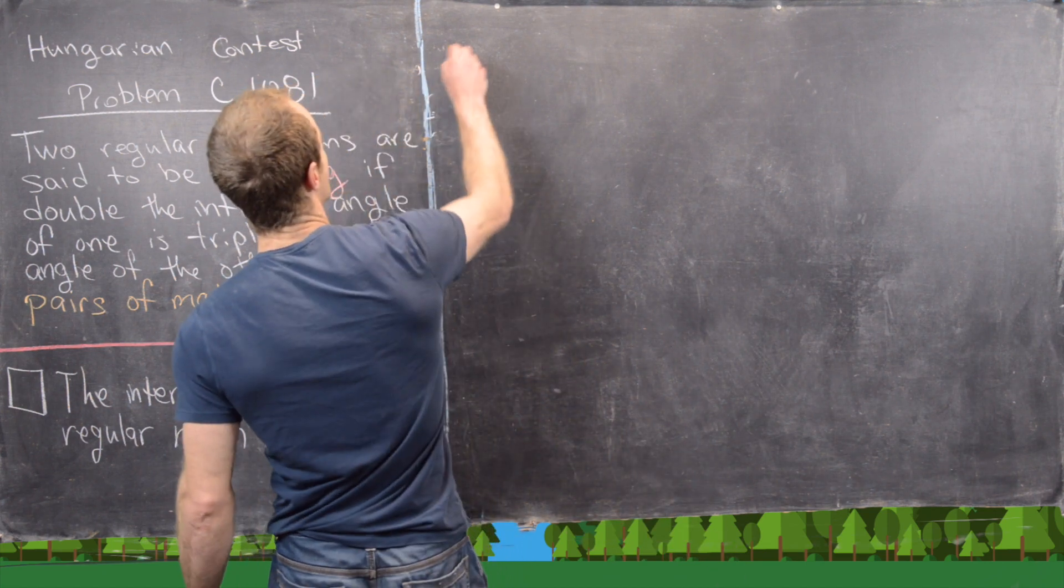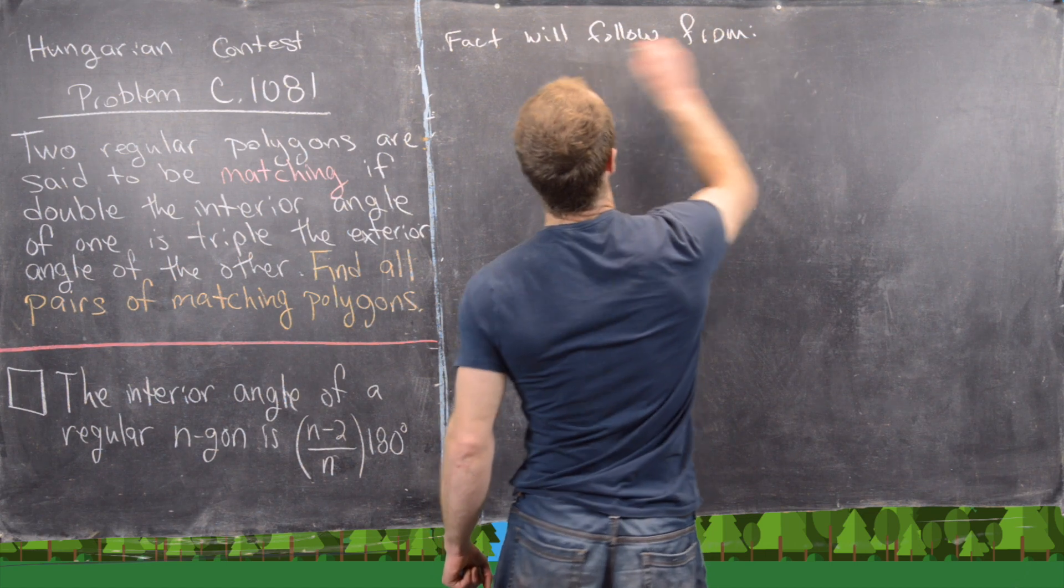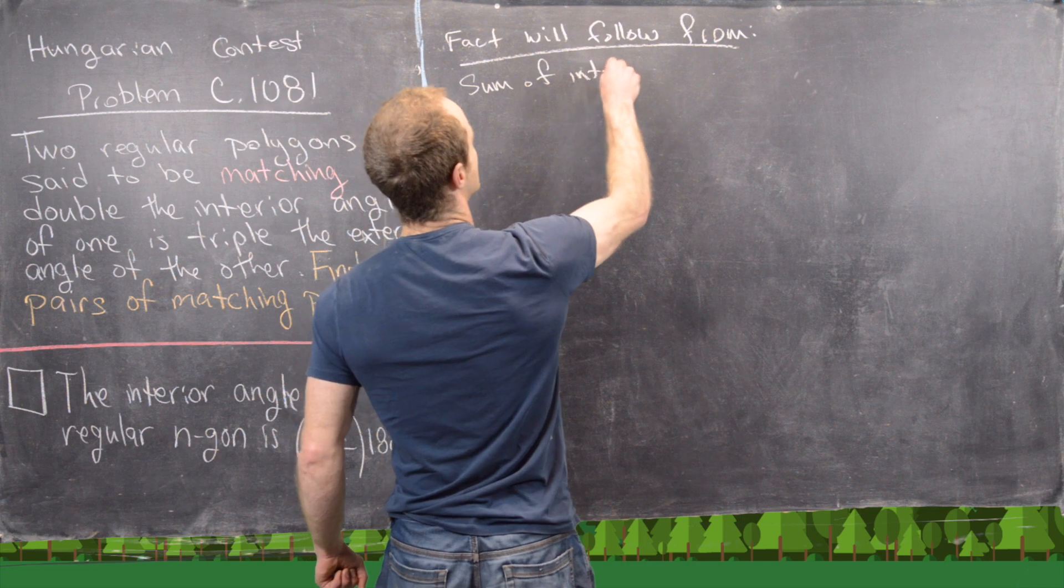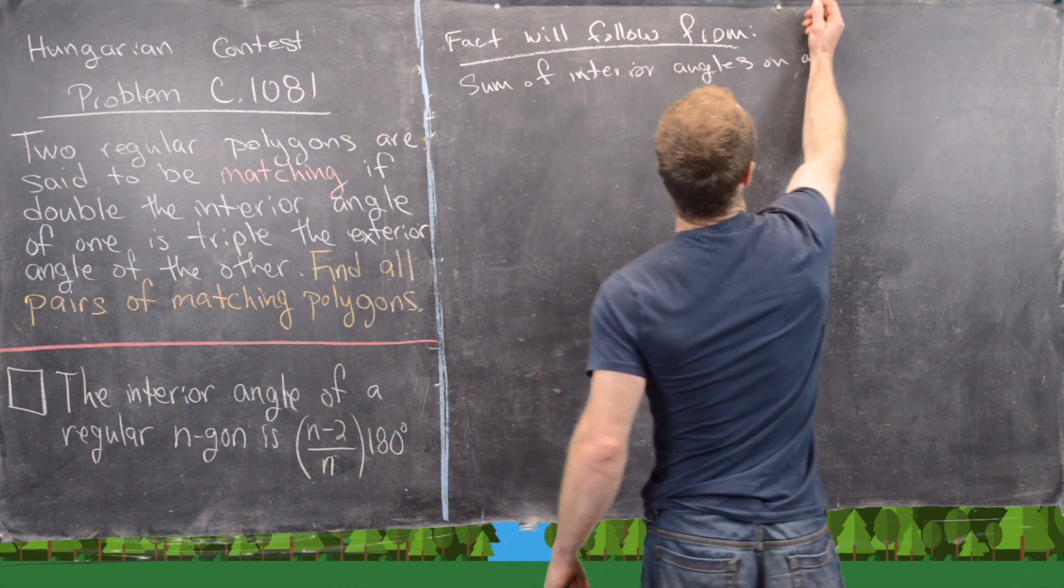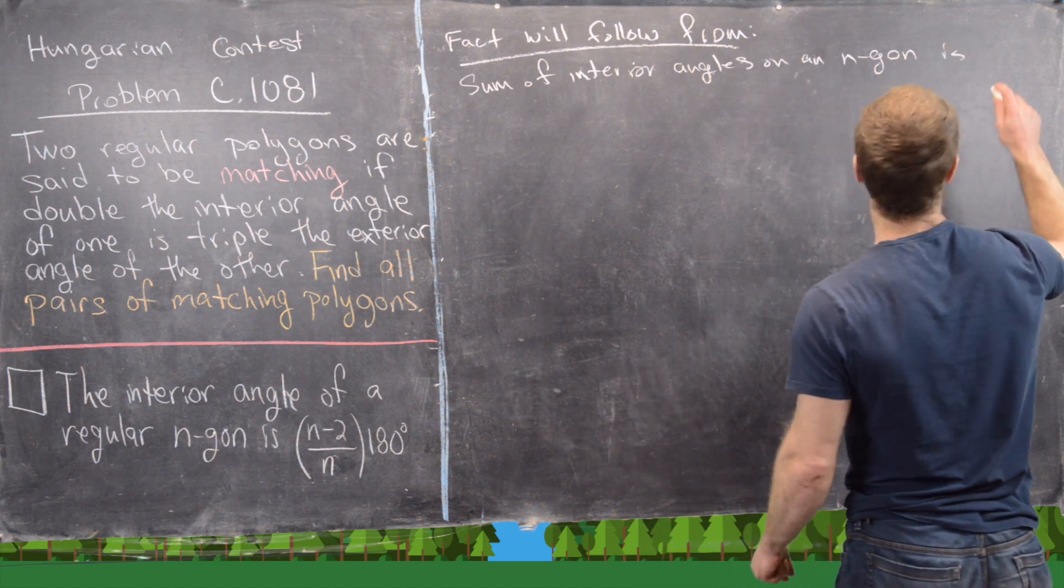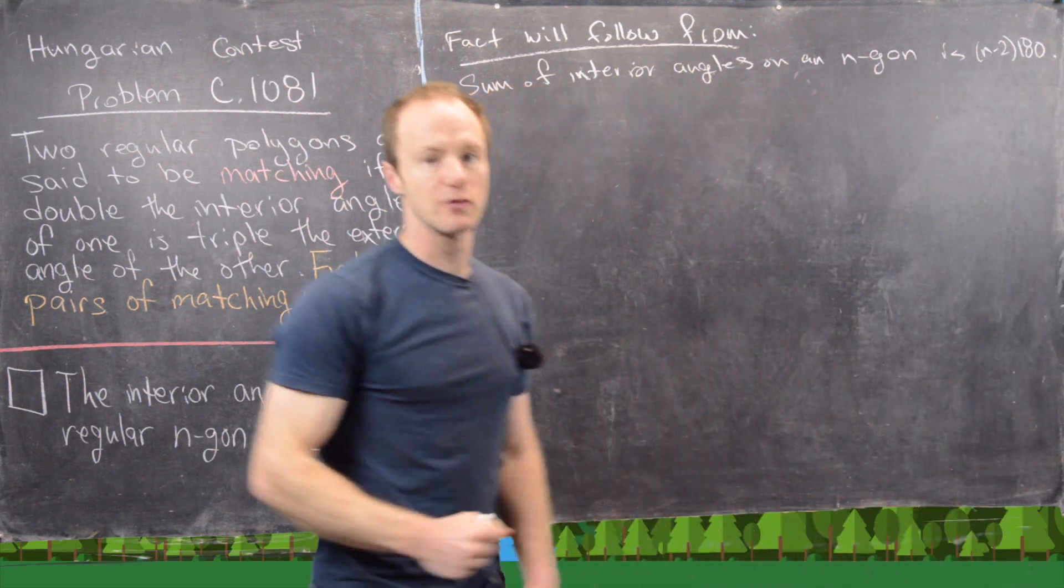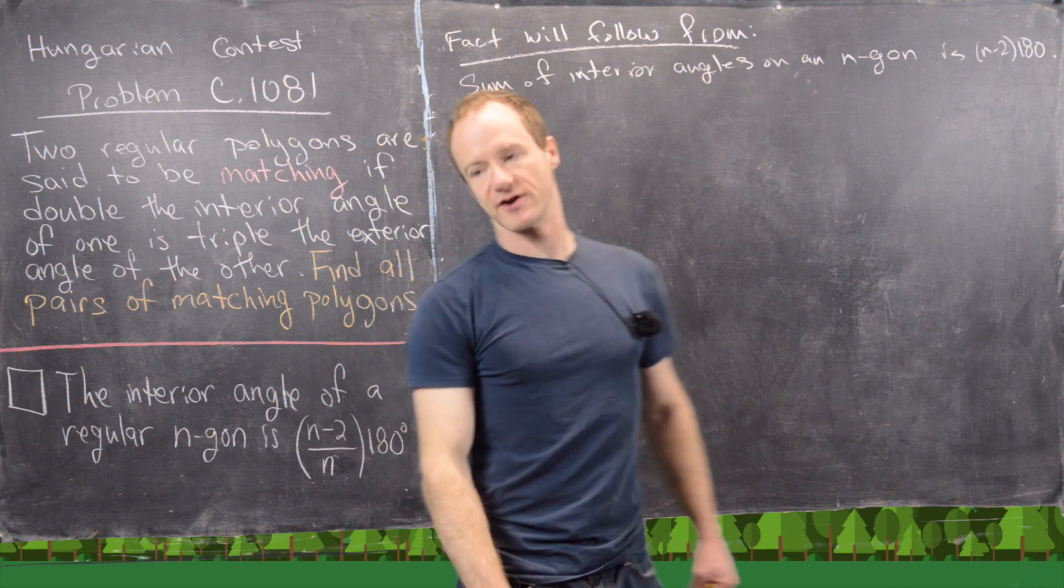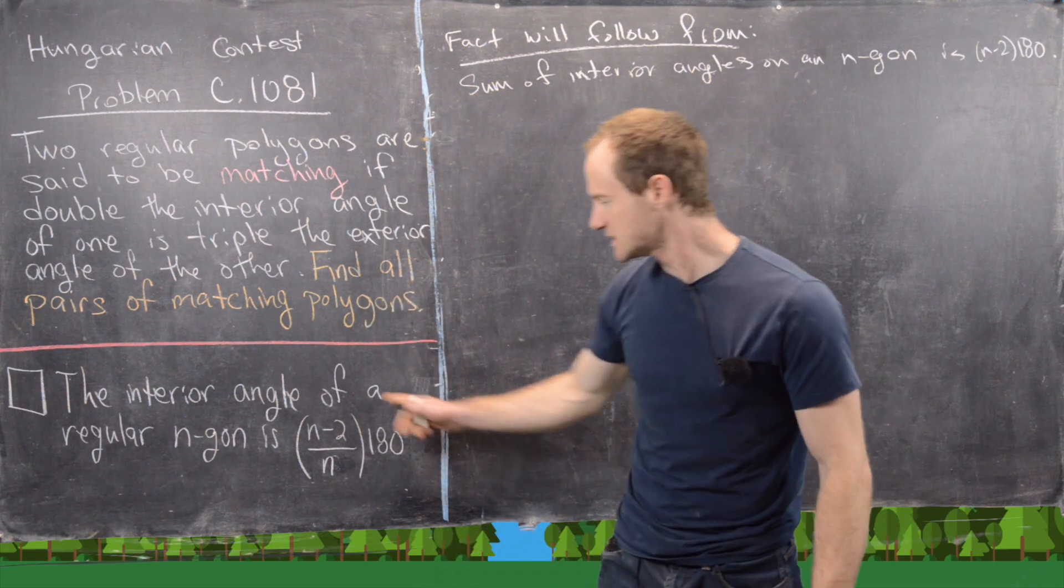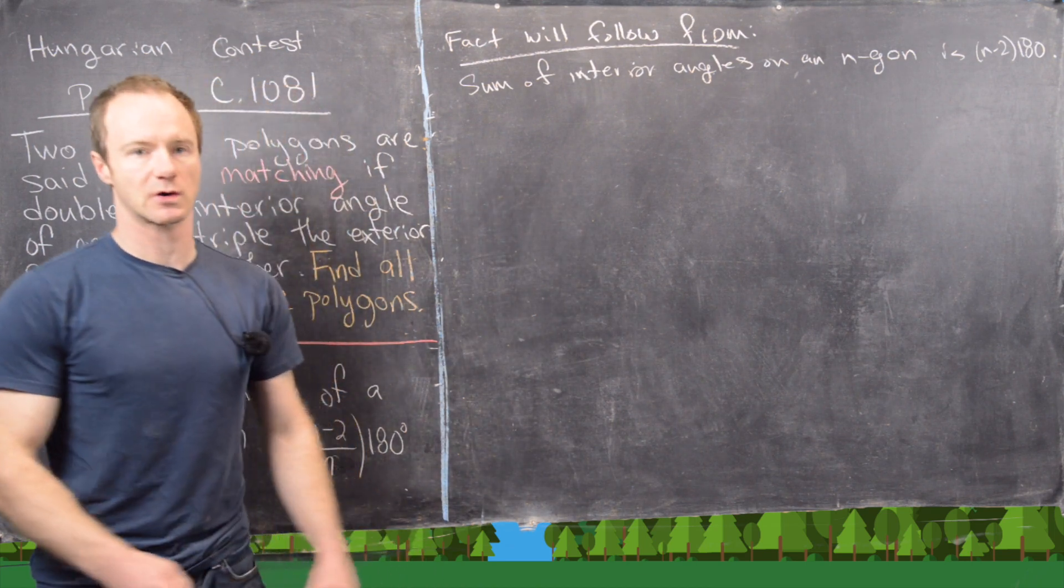So let's go ahead and look at this. This fact will follow from the following statement: the sum of the interior angles of an n-gon is (n-2) times 180. So if we can prove that, then obviously there are n interior angles and they all have equal angle measure in a regular n-gon.